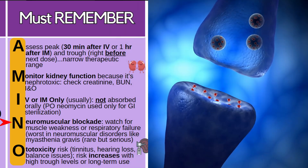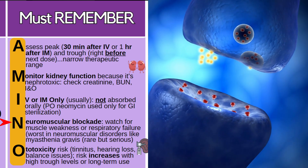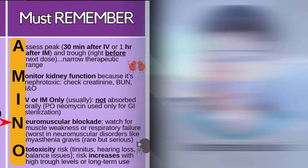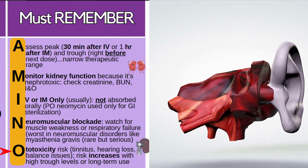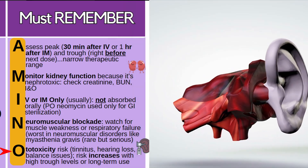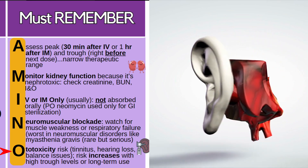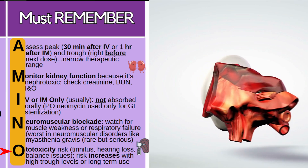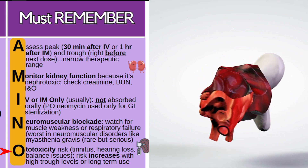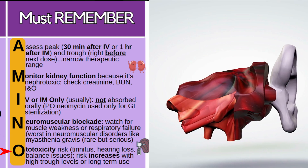N is for neuromuscular blockade — watch for muscle weakness or respiratory failure. This can actually be worse if your patient has a neuromuscular disorder like myasthenia gravis. And lastly, O is for ototoxicity — we're talking about the ears. Look for ringing in the ears, hearing loss, and balance issues. This risk increases with a high trough level or if the patient has been on this medication for quite a while.